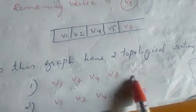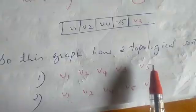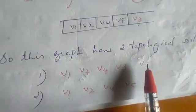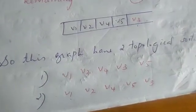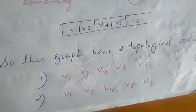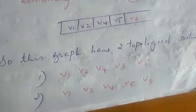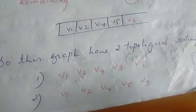So we will have one or more topological sorted lists. We will have the topological sorted list as the final result.